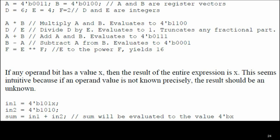Next, D divided by E — dividing D by E gives the quotient (6 divided by 4 evaluates to 1). Then A plus B — adding A and B evaluates to 4-bit binary 0111. Then B minus A is a subtraction. Then E power F: 4 to the power 2 equals 16. These are the arithmetic operator examples. If any operand bit has a value X, then the result of the entire expression is X.